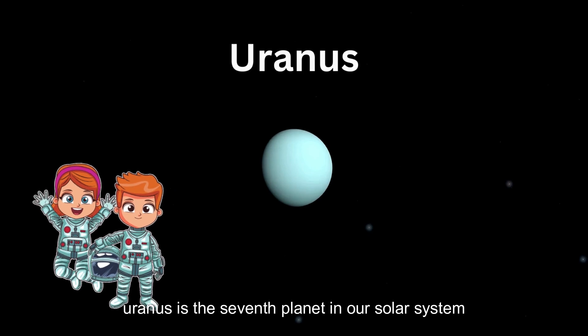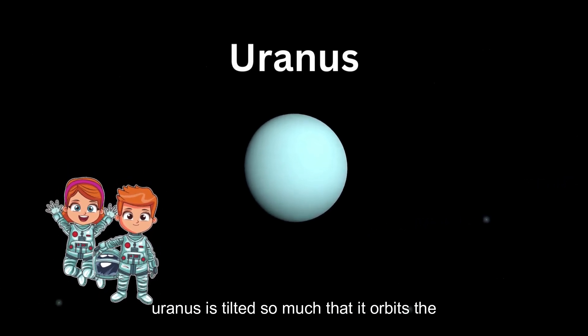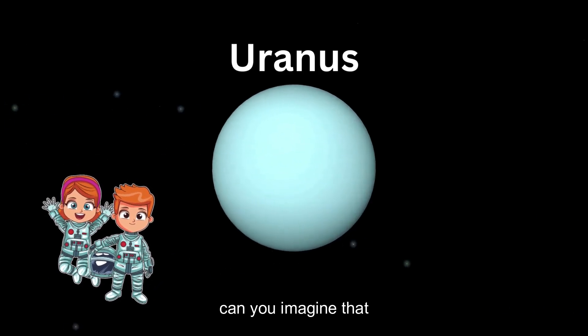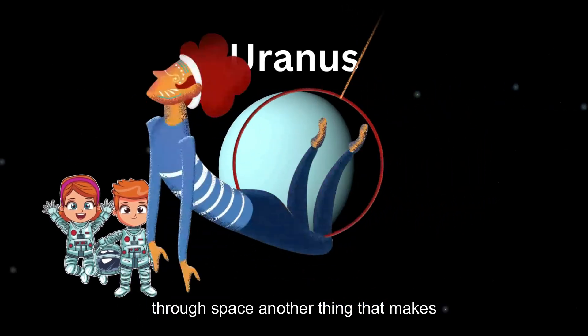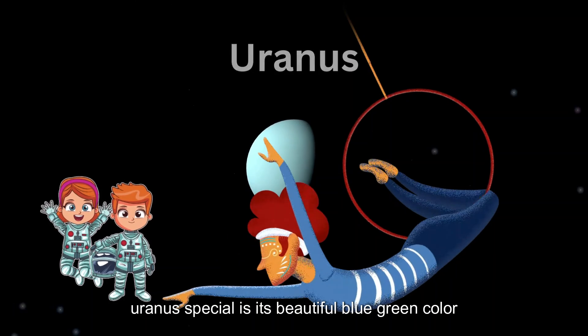Uranus is the seventh planet in our solar system. Uranus is tilted so much that it orbits the Sun on its side. Can you imagine that? It's like the planet is doing a cartwheel through space. Another thing that makes Uranus special is its beautiful blue-green color.